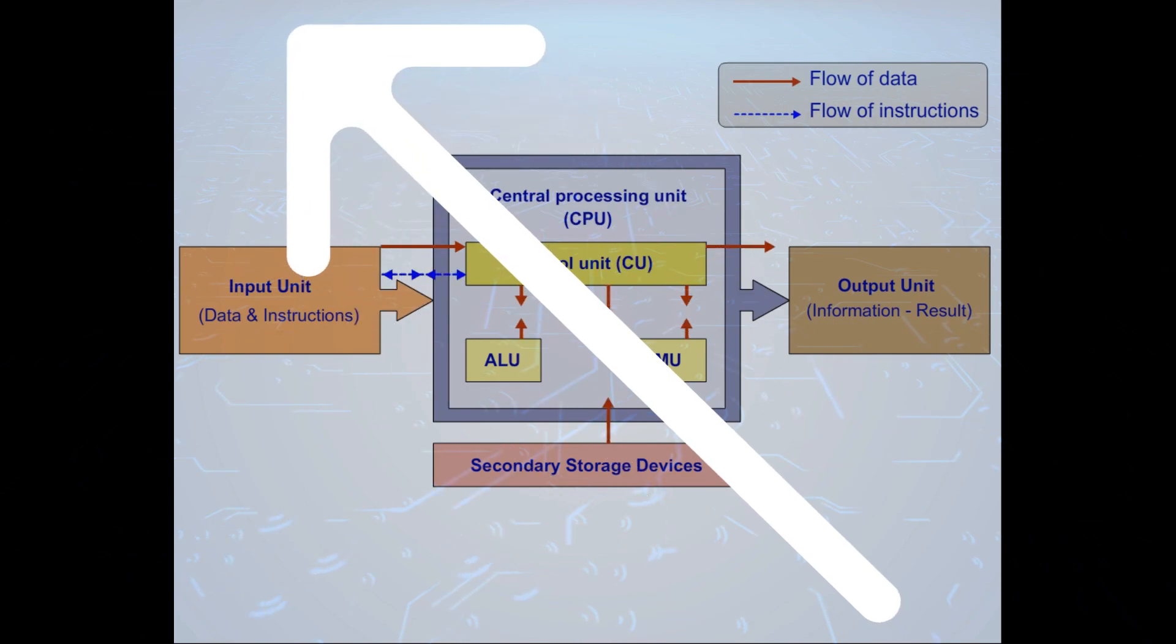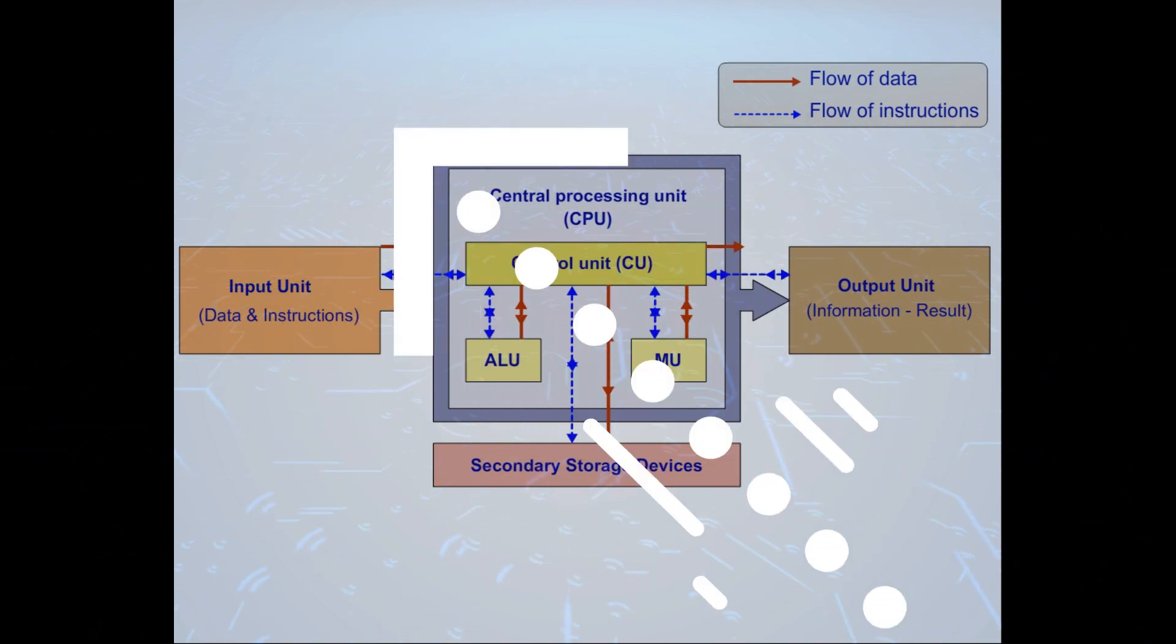Arrows represent the flow of data. Dotted arrows represent the flow of instructions.